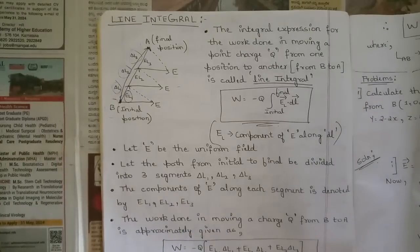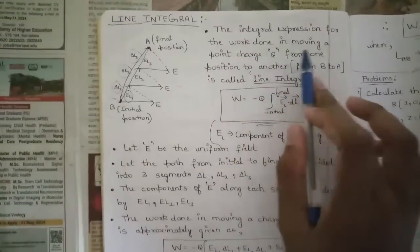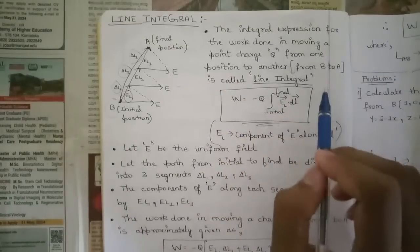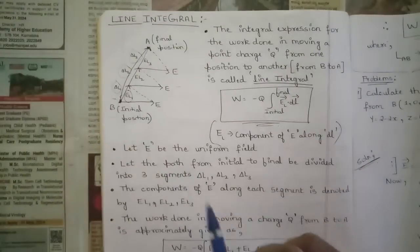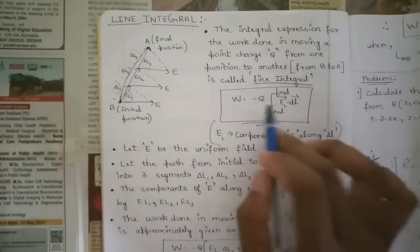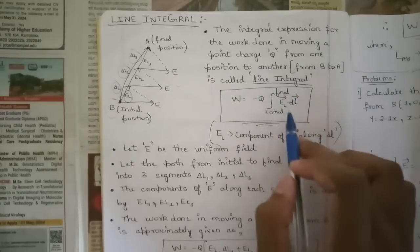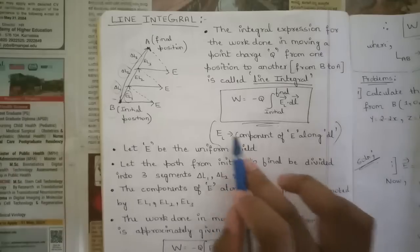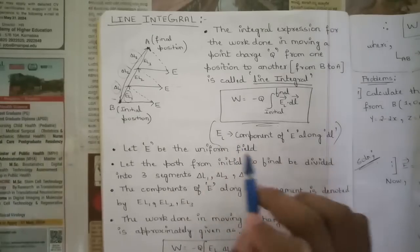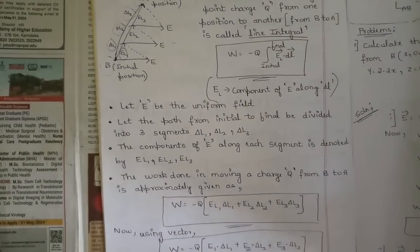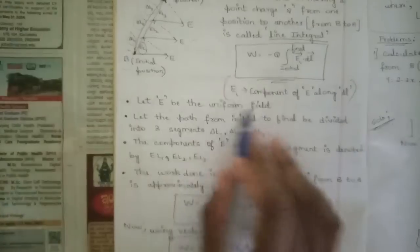The integral expression for the work done in moving a point charge Q from one position to another, from B to A, is called a line integral. The work done is given as W = -Q times the integral from initial to final position of E⃗·dl⃗, where E_L represents the component of the electric field along the line dl.